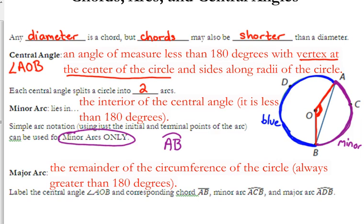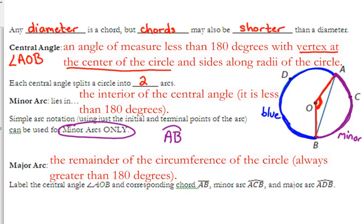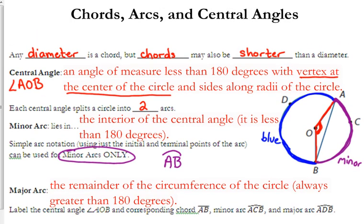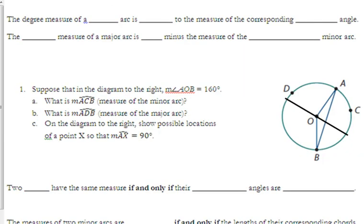But that's only for minor arcs that you only use two letters. Major arcs, you have to have three letters. Minor arcs, you could use three or two. So it's kind of whatever convention you prefer, but just be aware that you can use three or two for the minor arc.